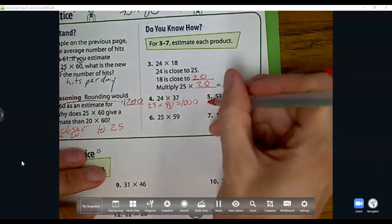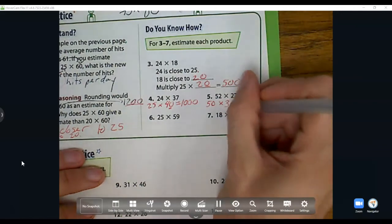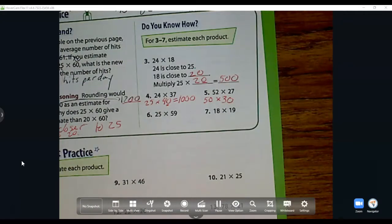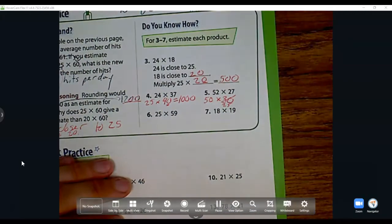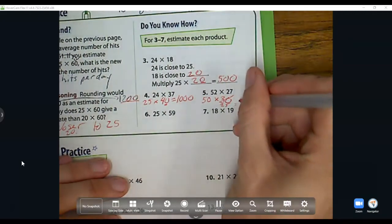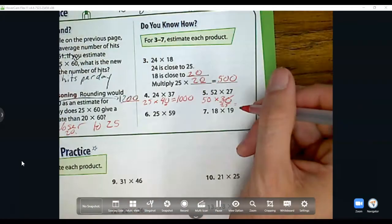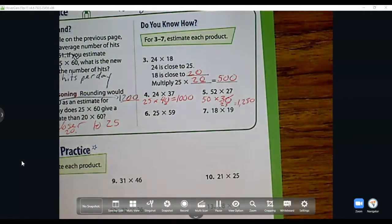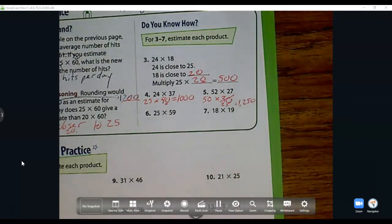Number five: 52 is close to 50 times 27 is close to 30. I could also do 25 if I wanted to. If I did 25, then 25 times 4 is 100, plus there's one more group of 25, which is 1250. If I did times 30 it would be 1500, but this one's closer because I'm only changing it by two. So let's do that 25.